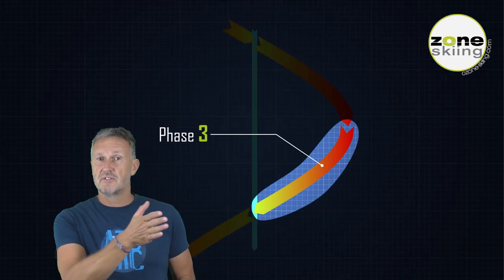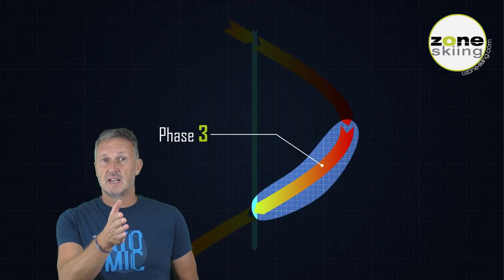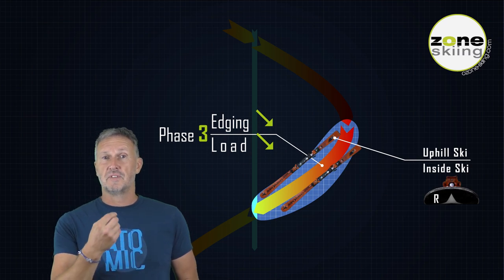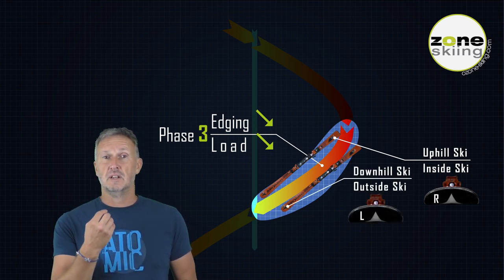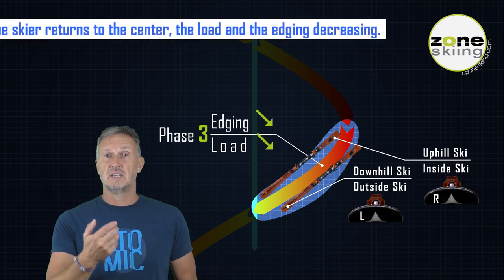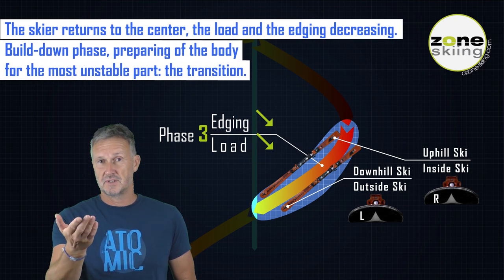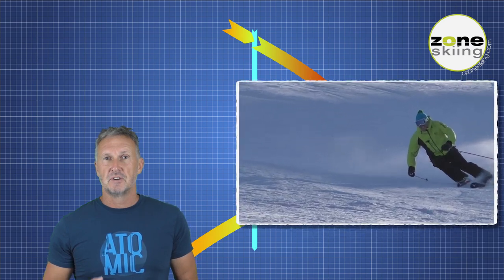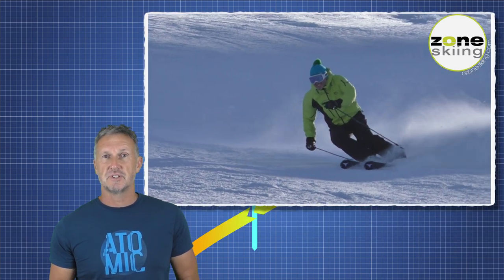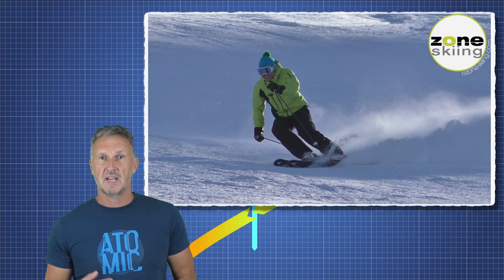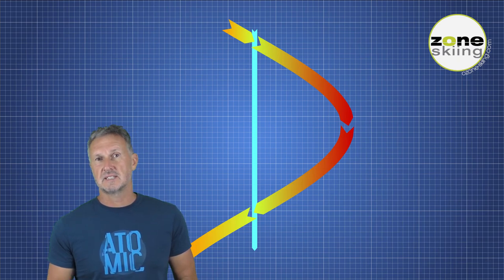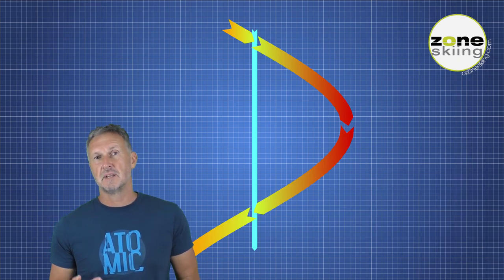In the third phase, the skier returns to the centerline. The skis have less resistance to fight with, so theoretically the load and the edging are decreasing. The skier winds down the turn and prepares for the next turn. In the last phase of the turn, the relationship of the skis changes: the outside ski is the downhill ski and the inside ski is the uphill ski.